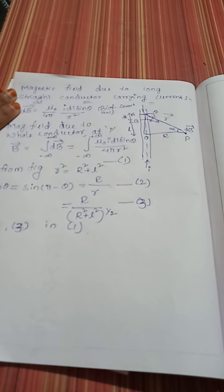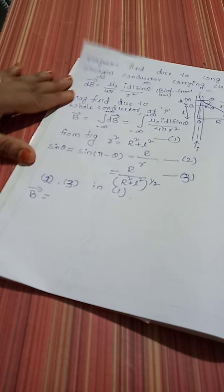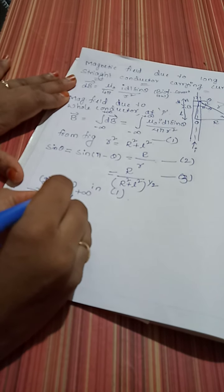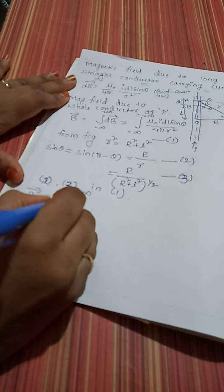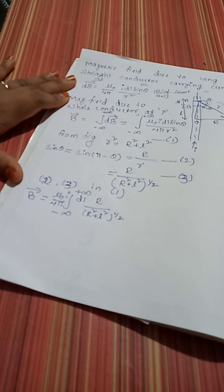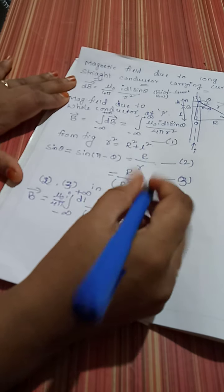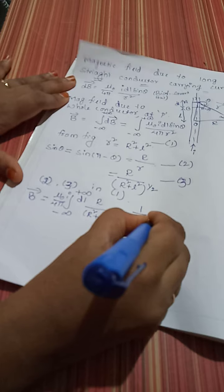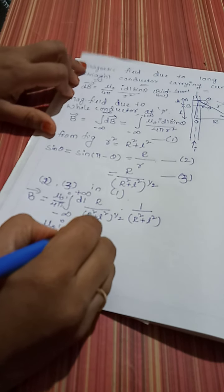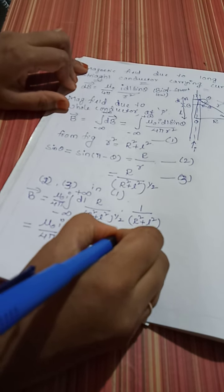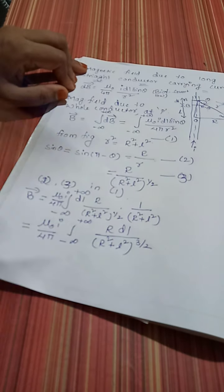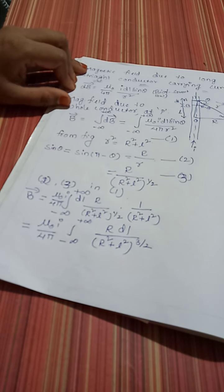Substituting equations 2 and 3 into equation 1, we get: B equals integral from minus infinity to plus infinity of mu naught I by 4 pi, times dl, times R divided by (R squared plus l squared) to the power of one-half, times one by (R squared plus l squared). This simplifies to mu naught I by 4 pi, times integral of R dl by (R squared plus l squared) to the power of 3 by 2.